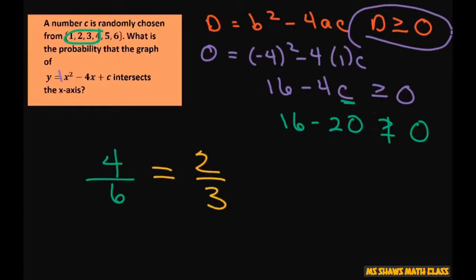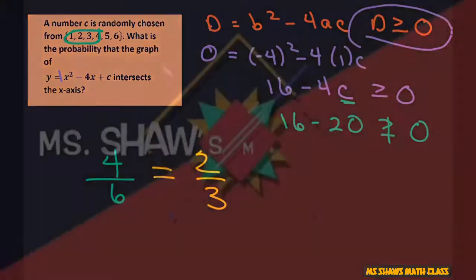And that's the probability that the graph of y equals x squared minus 4x plus c intersects the x-axis. That's it. Thank you, have a nice day. Bye bye.